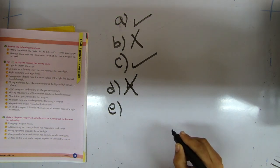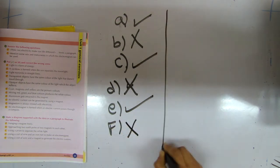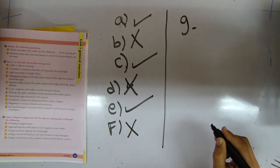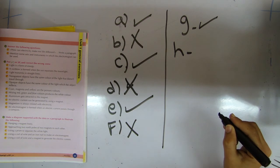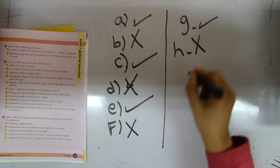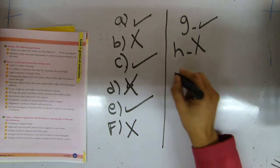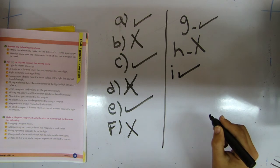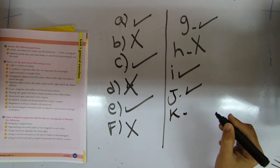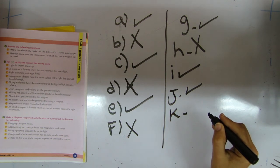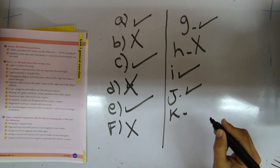Opaque objects have the same color of the light which the object reflects. It's correct. Number six: cyan, magenta, and yellow are primary colors. Wrong — they are secondary colors. Number seven: mixing red, green, and blue color produces white color. It's correct. Number eight: aluminium gets attracted to the magnet. It's wrong. Number nine: an electric current can be generated by using a magnet. It's correct. Number ten: magnetism is always related to electricity. Correct. Number eleven: an electromagnet is formed when an electric current passes through the compass. Wrong — it's formed when an electric current passes through a copper coil, not the compass.